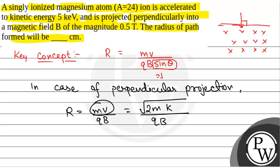So this will be the radius. We will put the value. We have mass of the particle, mass number is given as 24. So mass will be equal to 24 into 1.67 into 10 to the power minus 27 kg.